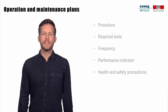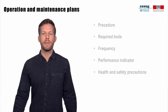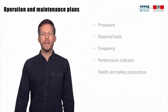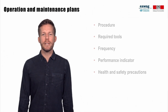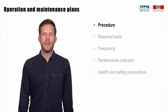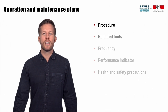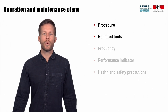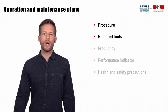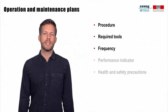Every fecal sludge treatment plant should have operation and maintenance plans. In general, these plans document the procedure of each operation and maintenance activity, the tools required to conduct the activity, and how often the activity has to be performed.